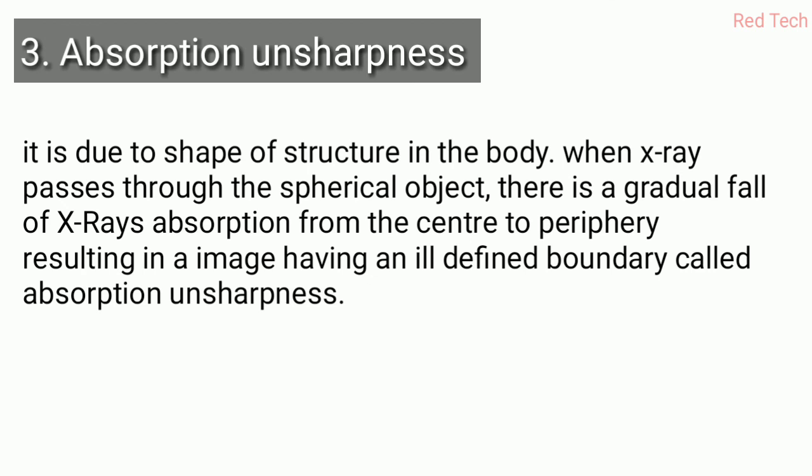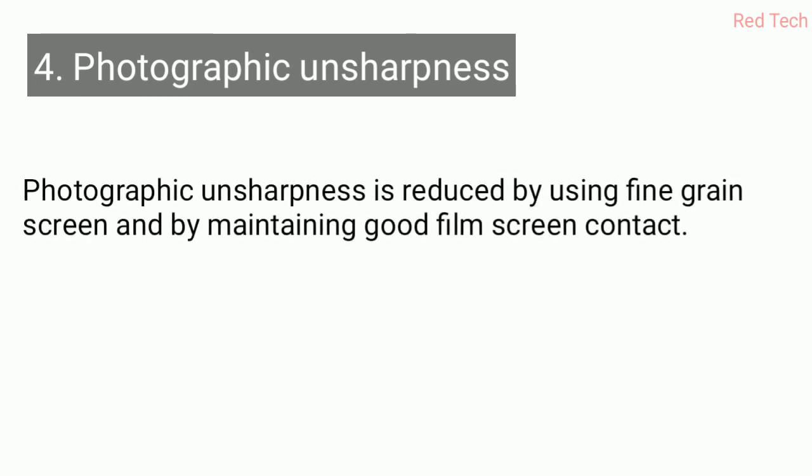The fourth type is photographic unsharpness. As the name suggests, this is related to the film. It is reduced by using fine-grained screens and by maintaining good film-screen contact. Maintenance plays a key role in reducing photographic unsharpness.